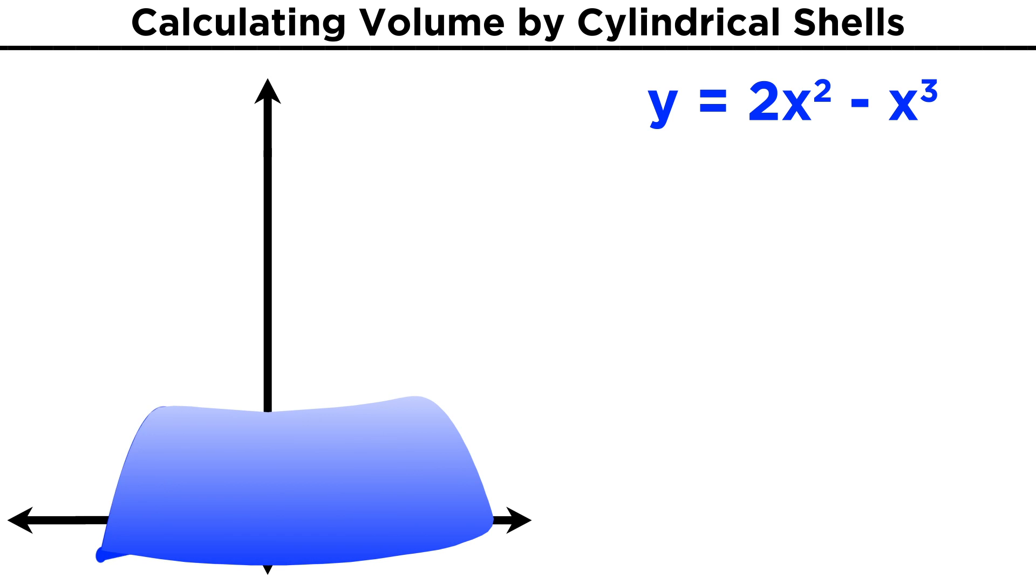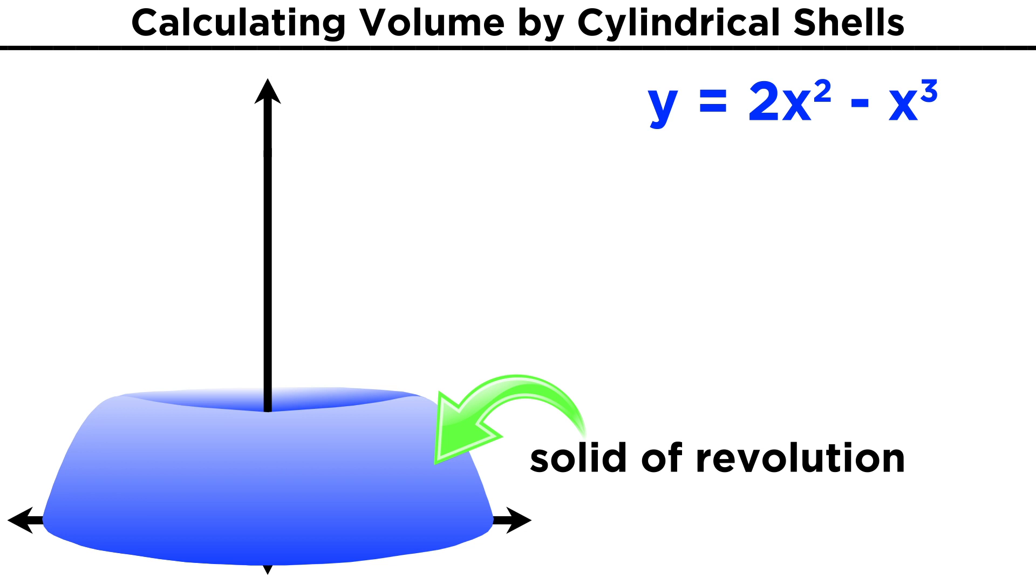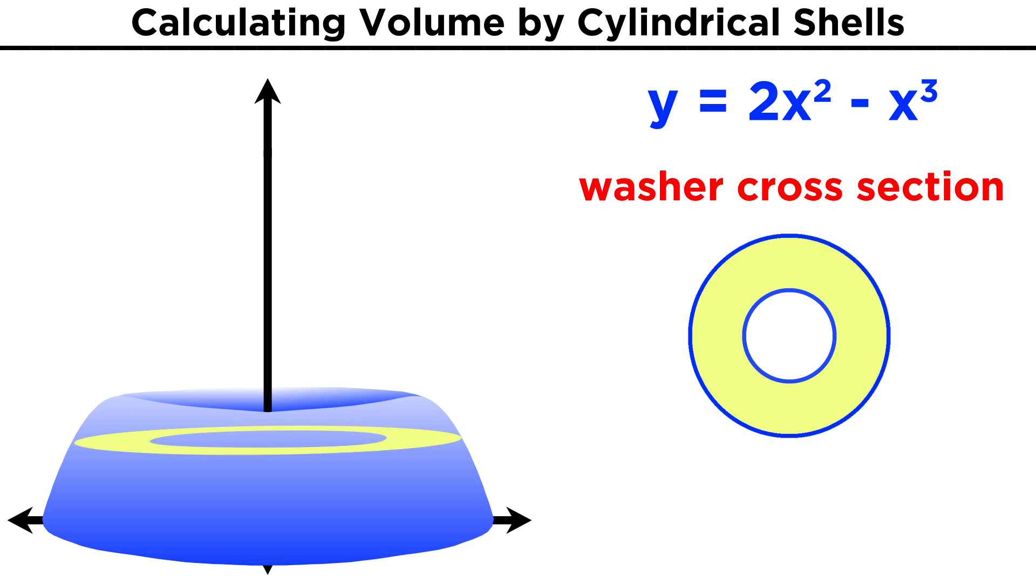Let's say we rotate this area around the y axis to get this bundt cake looking thing, a solid of revolution. A cross section of this solid would be a washer, given the empty middle region, which we can then push upwards from the base to the top of the solid. But the problem is this.